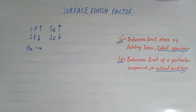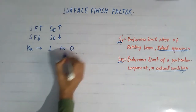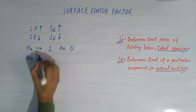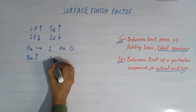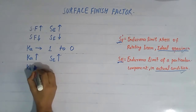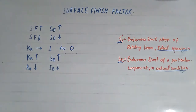This factor Ka determines how the endurance limit changes with surface finish. Ka actually varies from one to zero. As Ka increases, the endurance limit increases, and if Ka decreases, the endurance limit Sc will decrease. Here Ka is the surface finish factor.